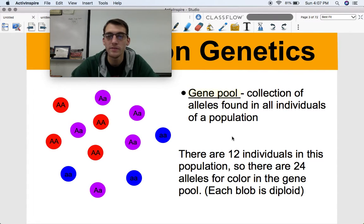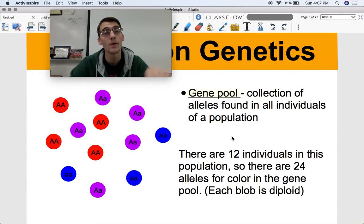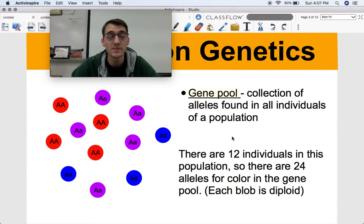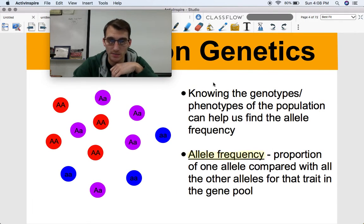So there are 12 individuals in this population, which means there are 24 alleles for color in the gene pool. So every single one of these organisms is diploid. And if you remember what that means, they have two sets of chromosomes, two sets of genes, one from mom, one from dad. So every single one of these organisms is going to have a genotype of two alleles. And I wrote them out over here on the image to make this easier. Each blob is diploid. There are diploid organisms.